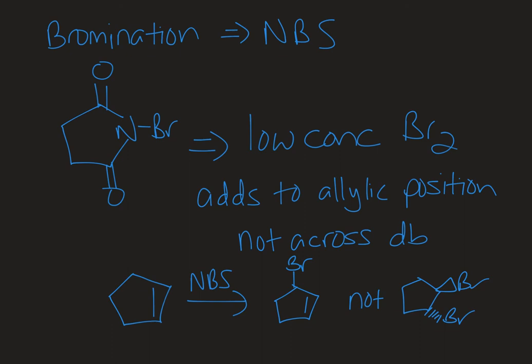So we can accomplish the same type of transformation with bromine, so we can substitute a hydrogen for a bromine. But instead of using Br2, we use a reagent called NBS, or N-bromosuccinamide, and that's this molecule right here. So NBS just provides a low concentration of bromine in solution, and that's important because bromine can add across a double bond, as well as adding a Br2 to the allylic position. So if we keep the concentration of bromine low, we get allylic halogenation in our desired product.